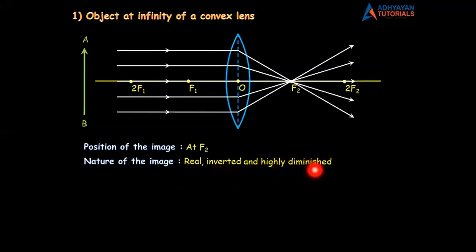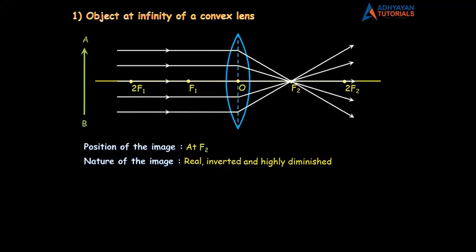The image is inverted and highly diminished. Now we will complete the diagram. I want you to draw these refracted rays. You have made the parallel rays. Now make the refracted rays that pass from F2. Please be careful — at the end of all refracted rays, put arrow marks.